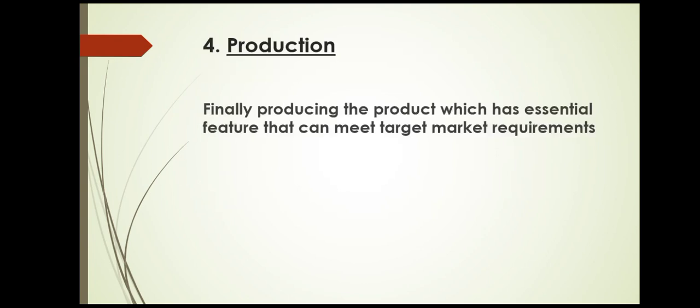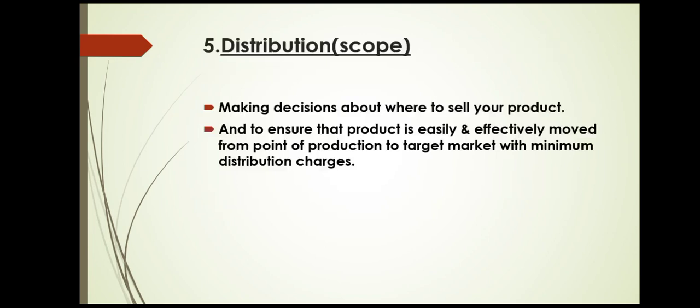Once you have decided how to design the product, you finally produce it with essential features that meet target market requirements. Take mobile phones as an example — companies release new models with added features every fortnight or month because of competition. Manufacturing keypad phones now would have no demand since customers prefer touchscreen mobiles. So you produce on the basis of the needs of your customer.